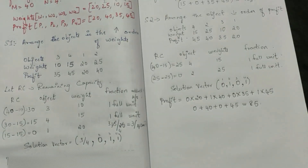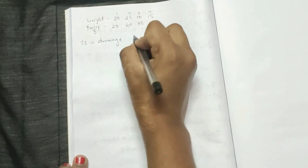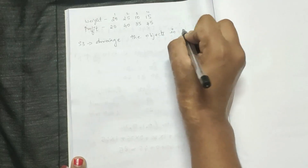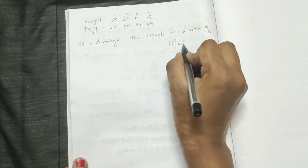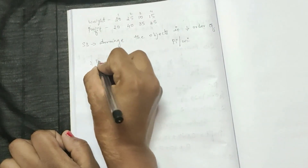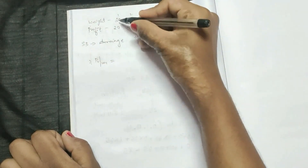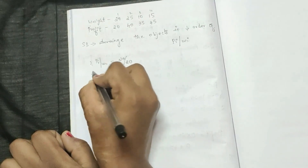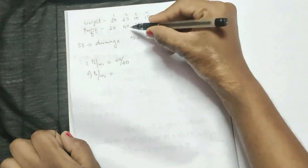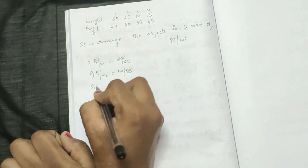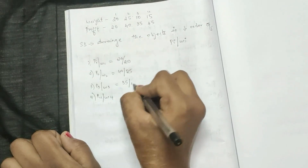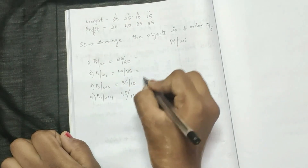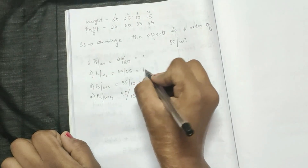For Strategy 3, arrange objects in decreasing order of pi/wi (profit-to-weight ratio). Calculate: p1/w1 = 20/20 = 1, p2/w2 = 40/25 = 1.6, p3/w3 = 35/10 = 3.5, p4/w4 = 45/15 = 3.